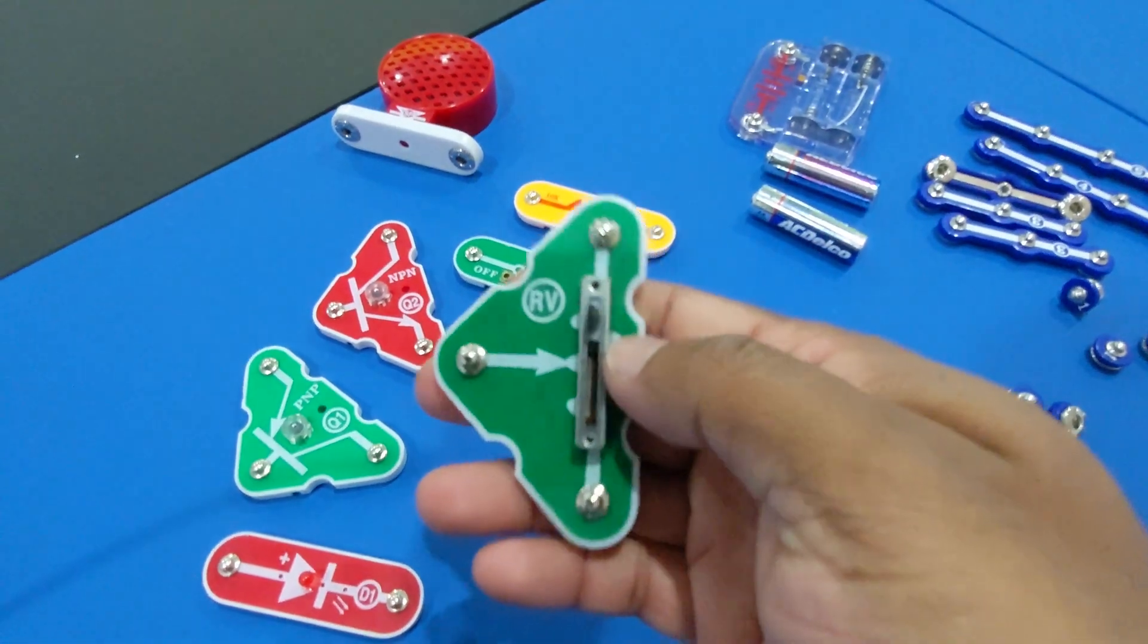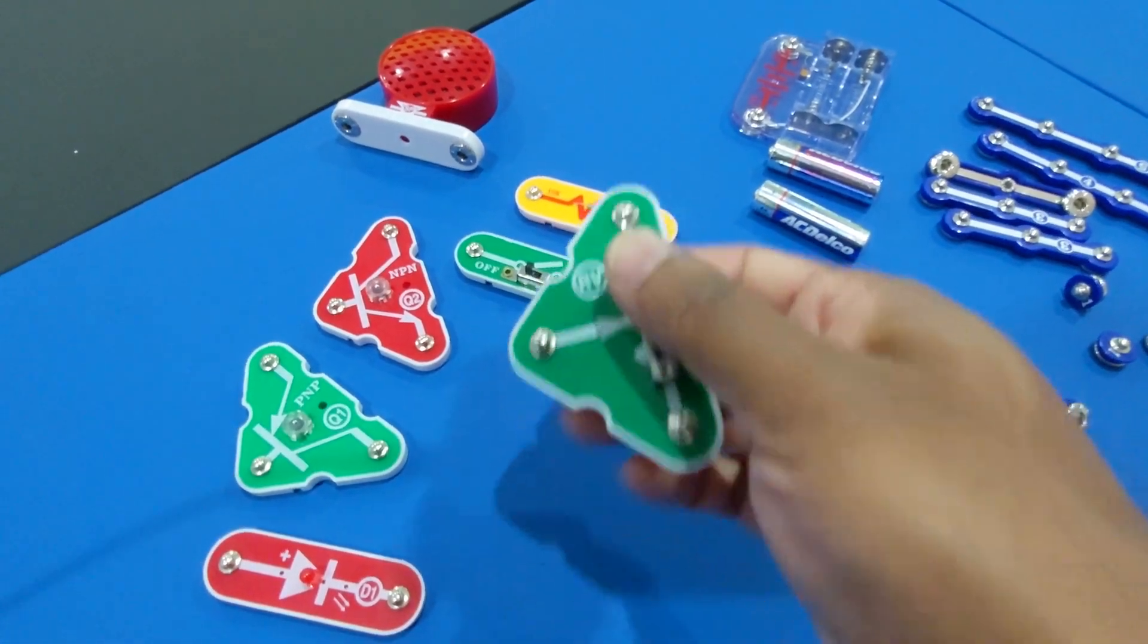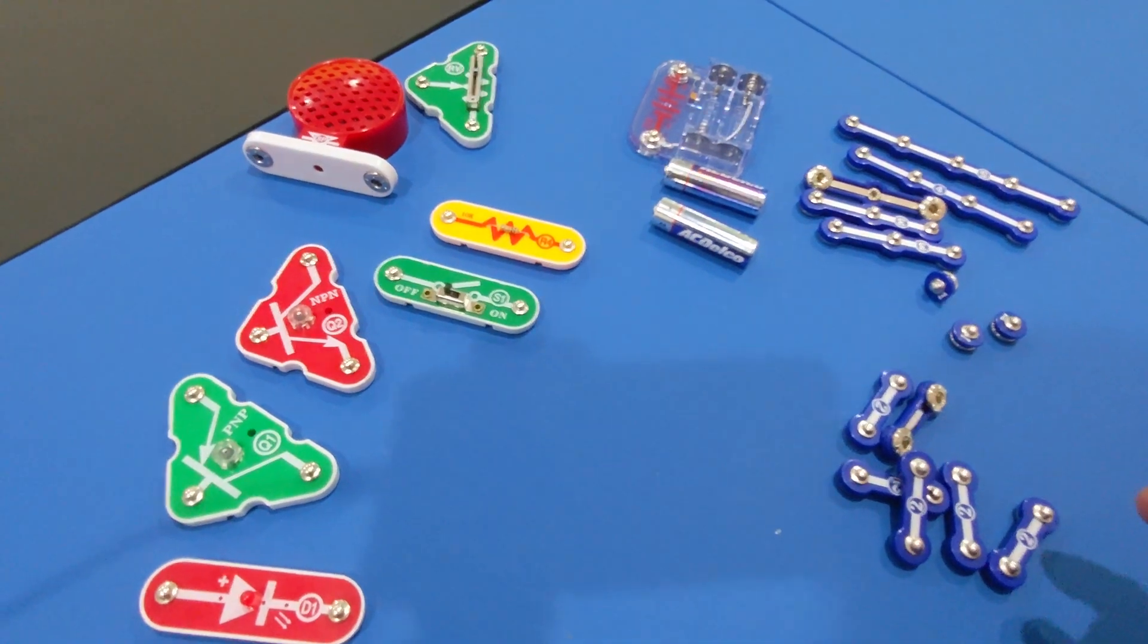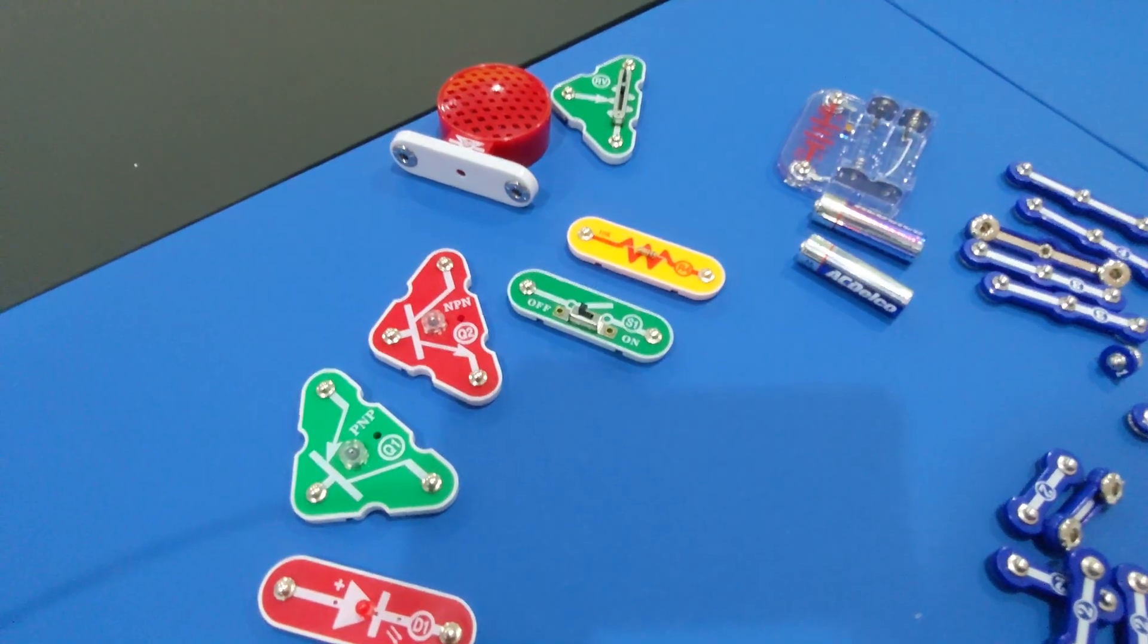And this is the adjustable resistor that's going to control the tone that we make and then we have our circuit connecting parts, batteries, and a battery box. Let's get to it!